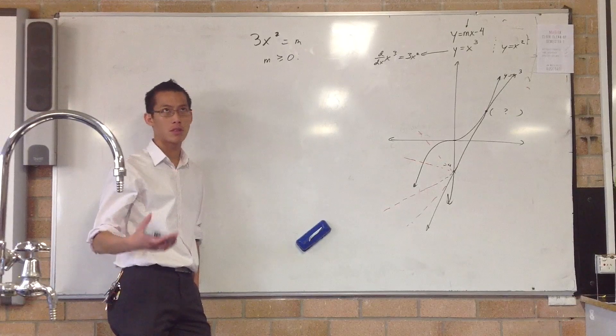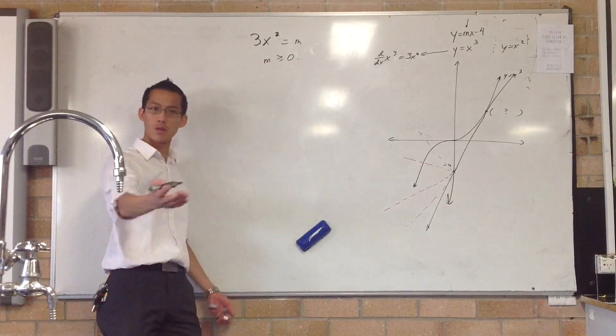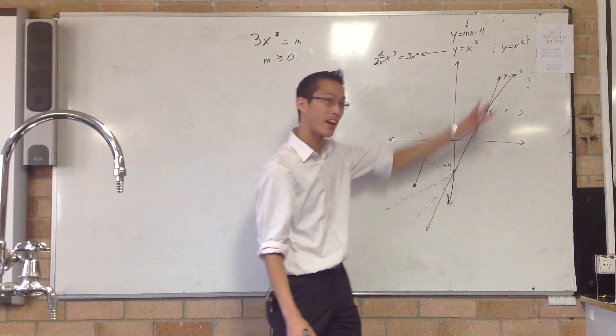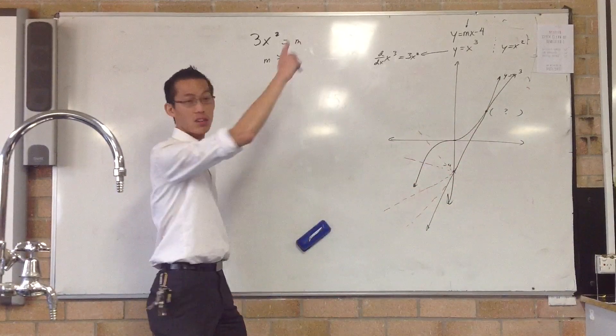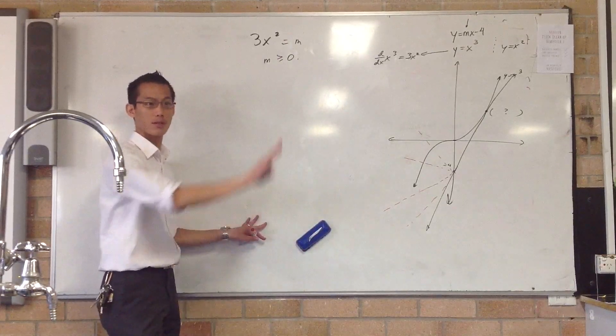Because x squared, the smallest it can be is zero, right? So, therefore, the smallest M can be is also zero. And what's that correspond to? The fact that this has to be going up. That makes sense. x cubed is monotonically increasing. So, therefore, the line that we should have should also have positive gradient.